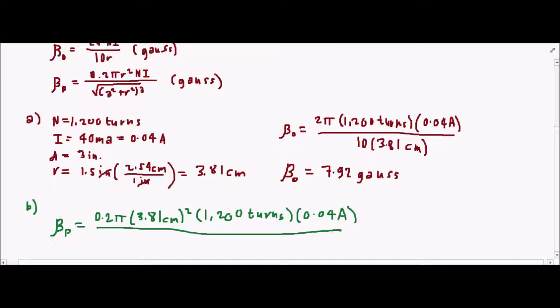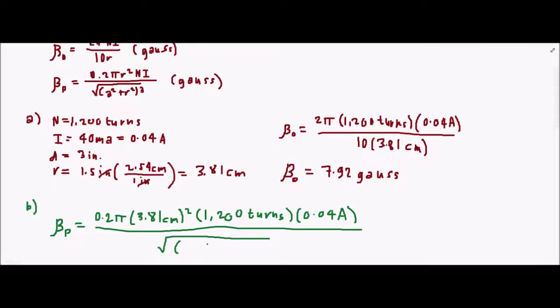All over the square root of a cubed, where a is two inches. We need to convert this to centimeters, so that is 2.54 centimeters per inch times 2, which gives us 5.08 centimeters.